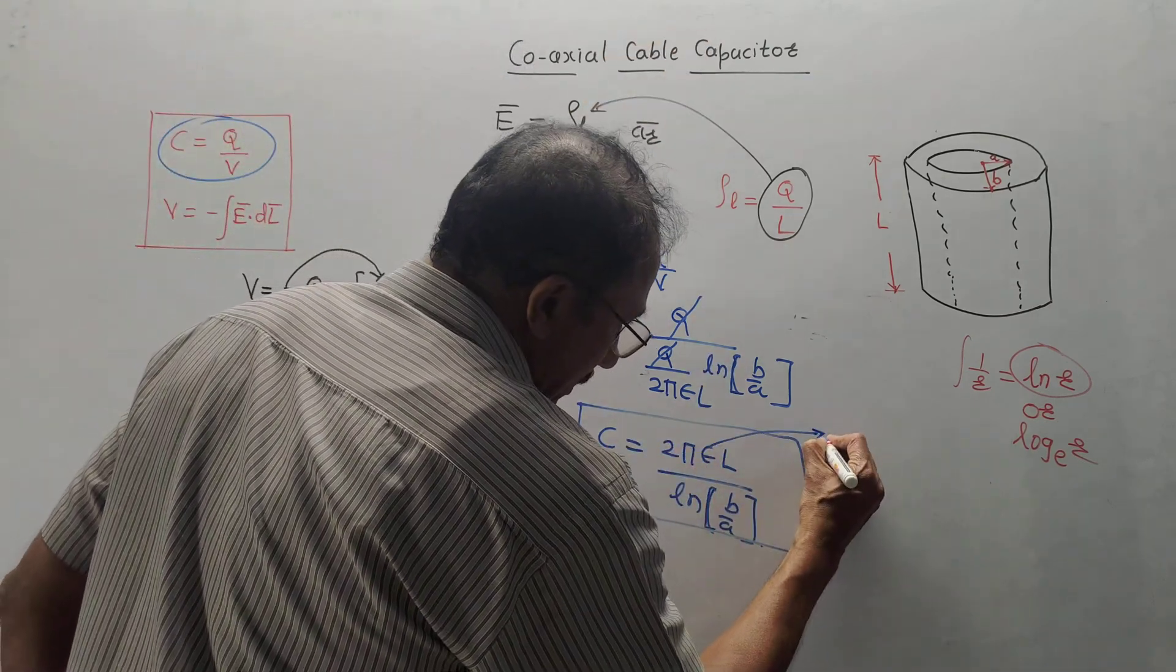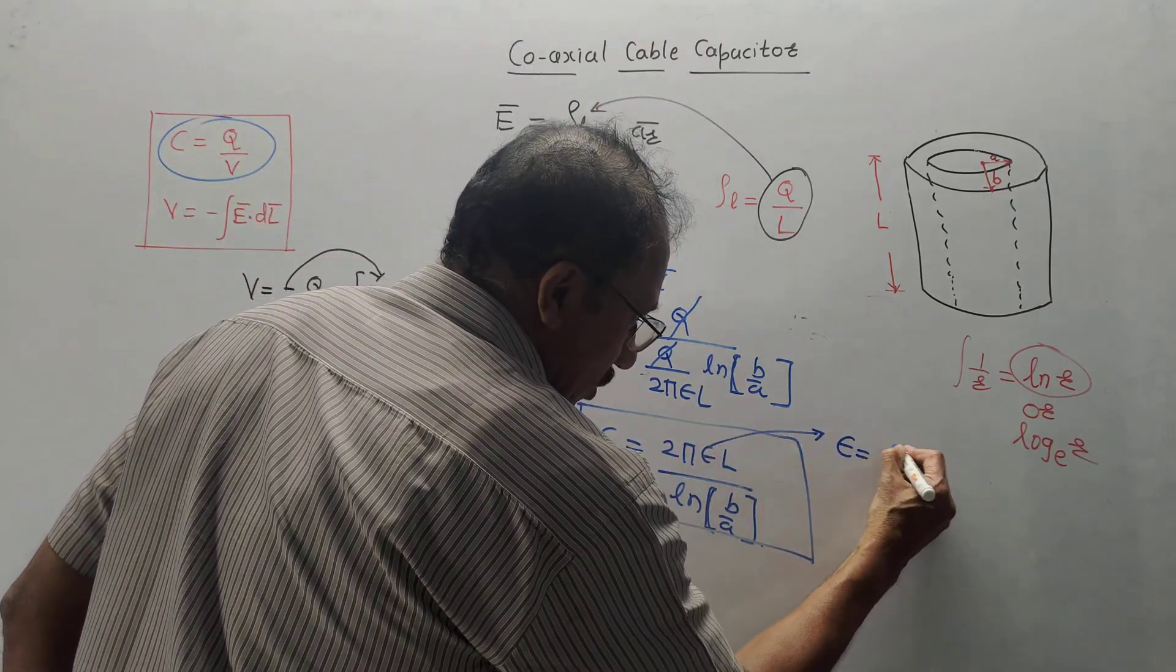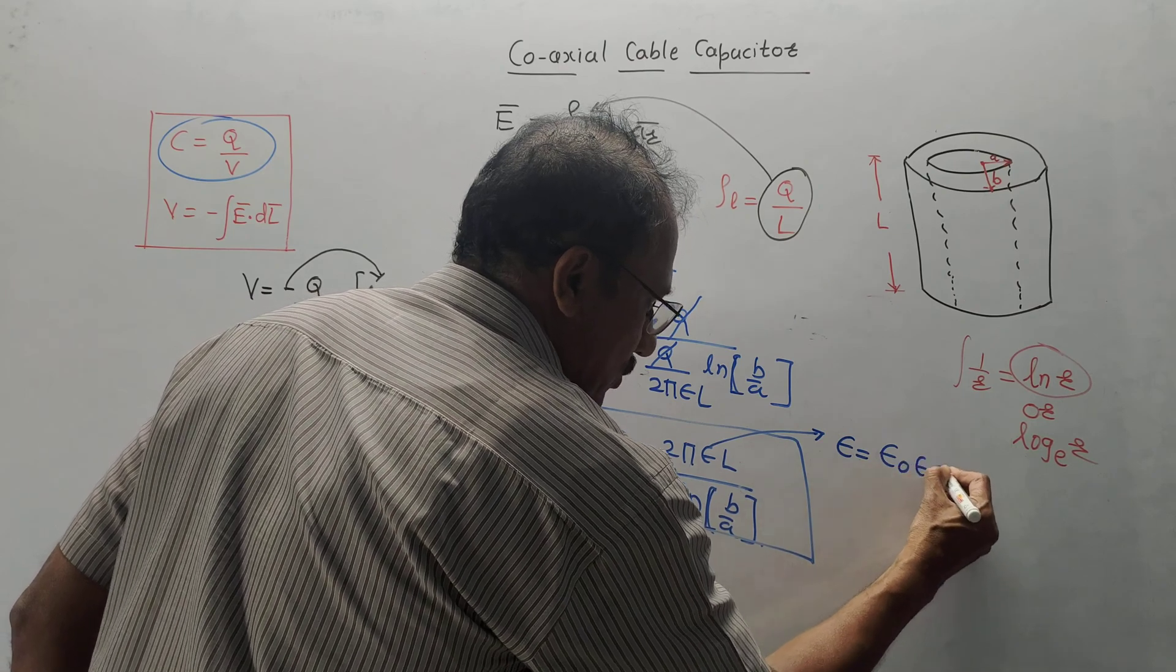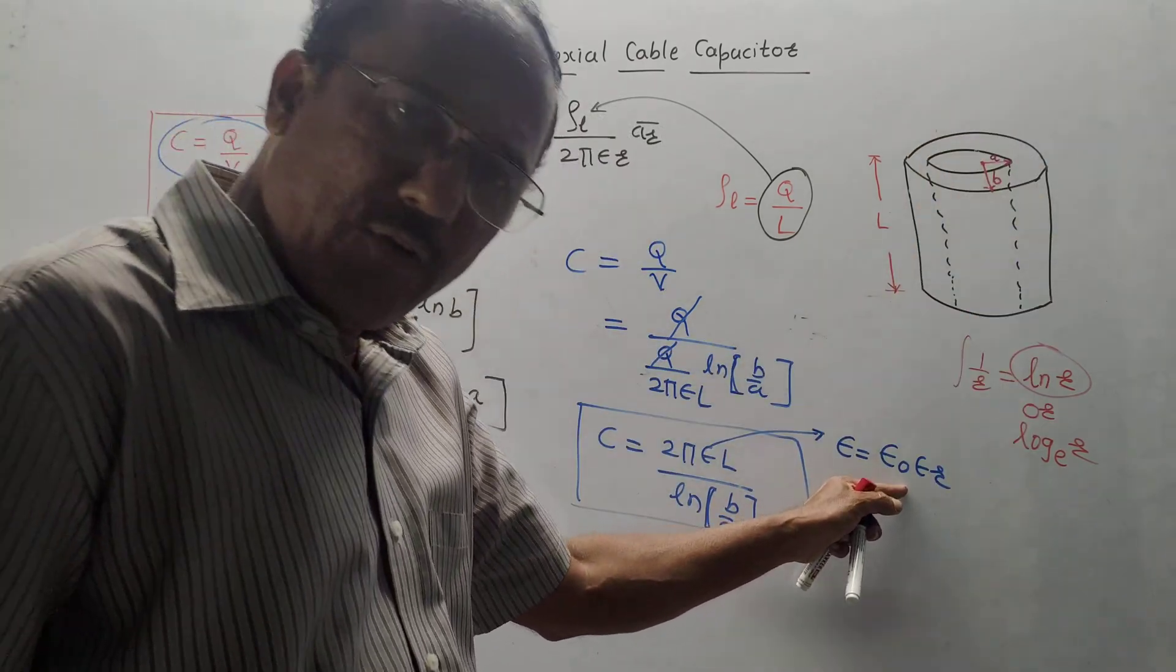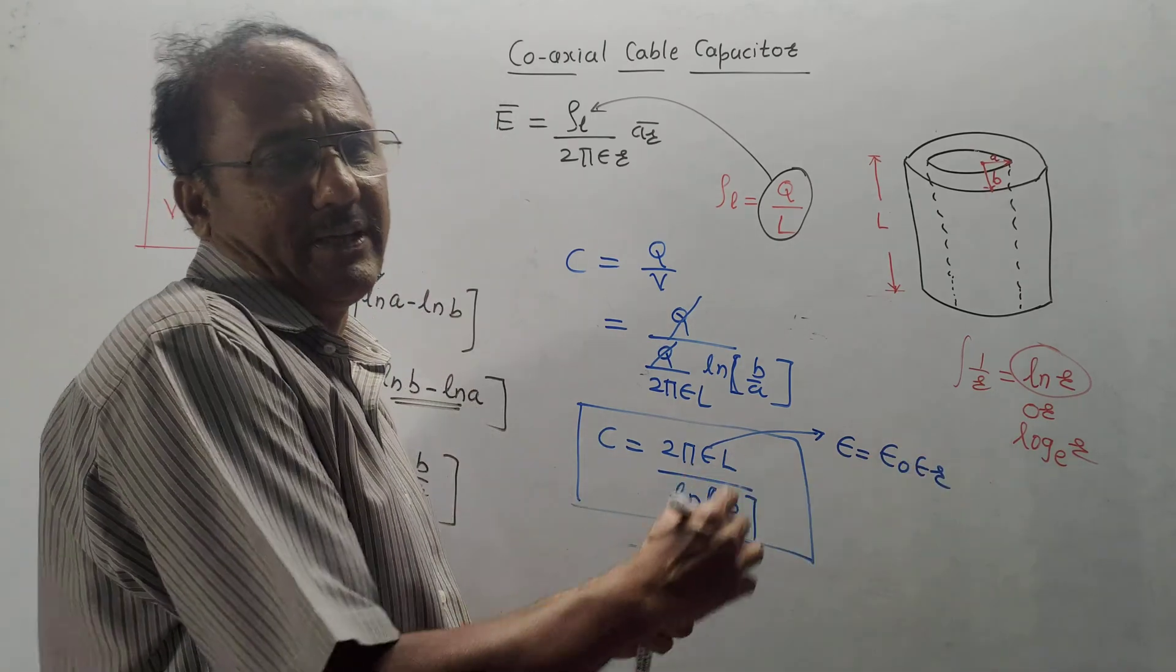This epsilon, keep in mind, is always expressed as epsilon 0 into epsilon R, where epsilon 0 is permittivity of free space, epsilon R is relative permittivity.